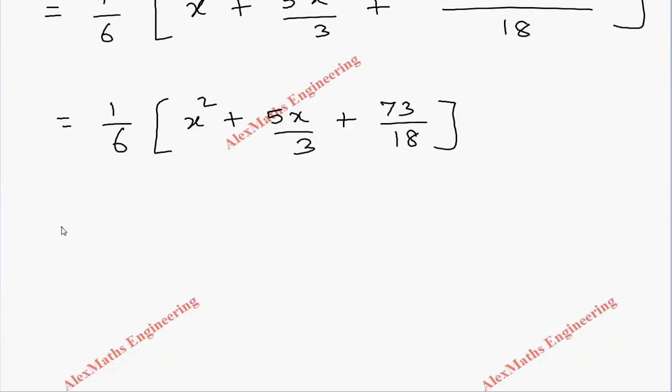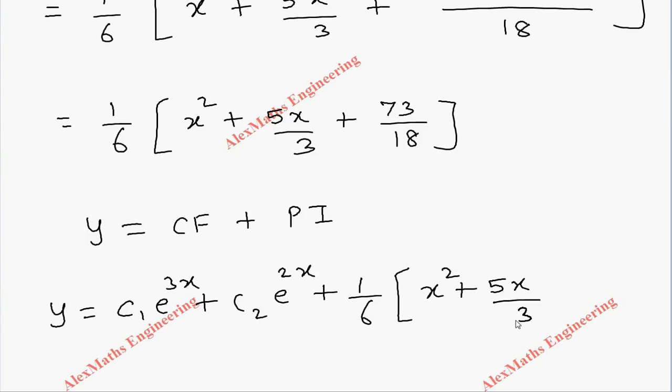We have to combine CF and PI for the complete solution. So y = c₁e^(3x) + c₂e^(2x) + 1/6[x² + 5x/3 + 73/18]. Thank you.